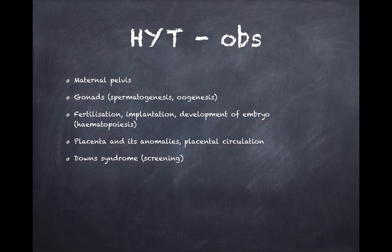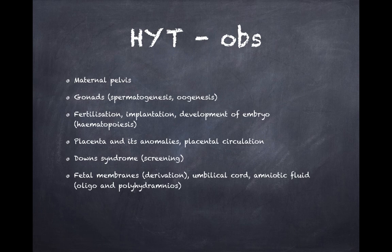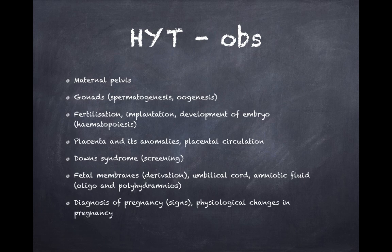Fetal membranes — how they are derived — and the umbilical cord section, noting what structures are present. Then amniotic fluid: polyhydramnios when it increases, oligohydramnios when it decreases. Know the causes for these conditions, how they present, how to manage them, and the AFI indices.